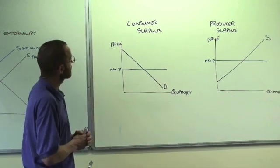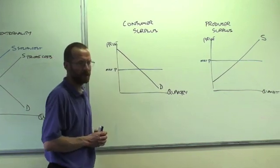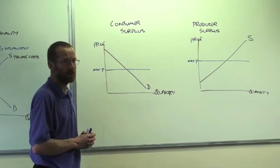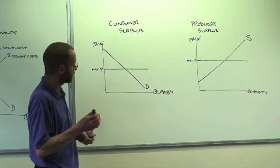These diagrams show the concepts of consumer and producer surplus. Consumer surplus is the difference between what a consumer would pay for a product and what they actually pay for a product.